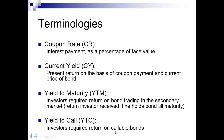Yield to call is the investor's required return on callable bonds. These are bonds that have a certain maturity time, but as an investor you can redeem the bond before maturity. In simple words, the company has the option — when offering these bonds — to take them back from the investor before the maturity time. For example, if a bond has a maturity of five years but the company plans to buy it back after two years, this option makes it a callable bond.